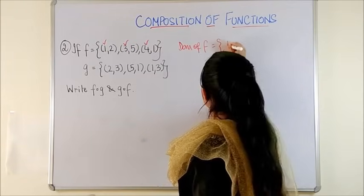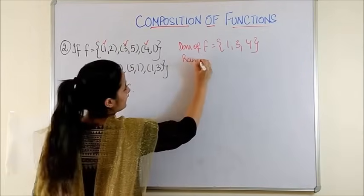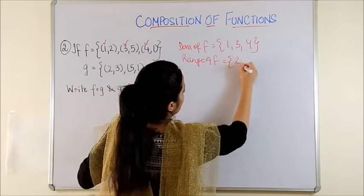So domain of F over here is all the first coordinates that is 1, 3 and 4. And range of F are the second coordinates which are 2, 5 and 1.